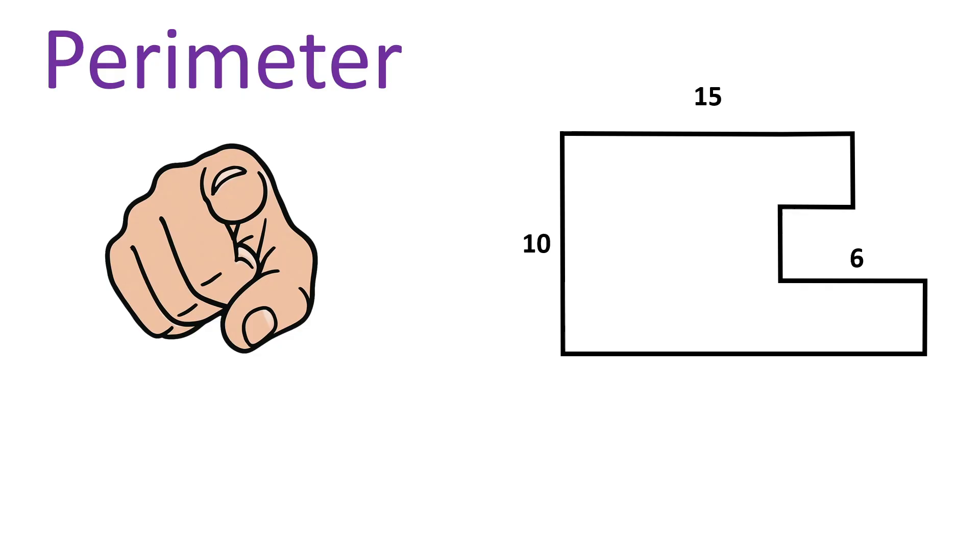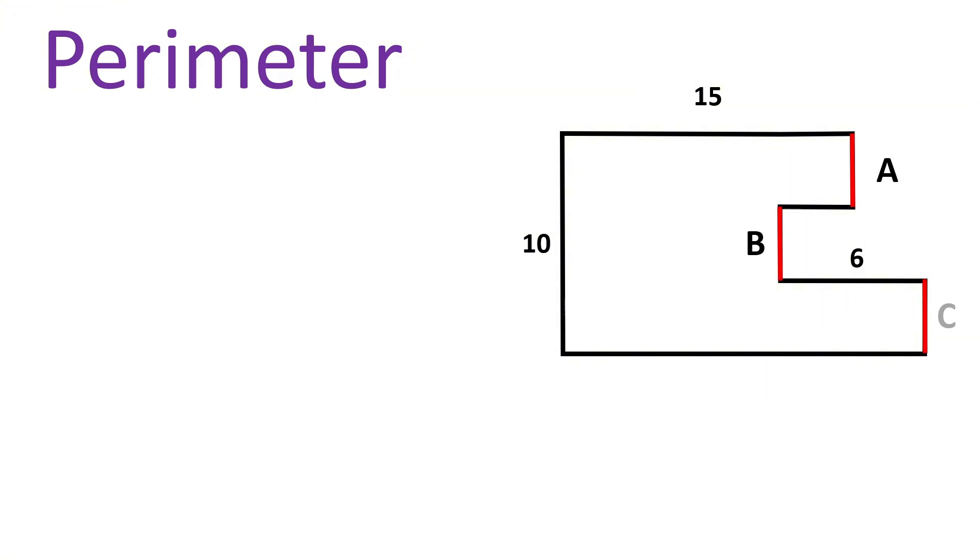So can you find its perimeter? Let's check it step by step. As a first step, let us label these vertical missing side lengths as A, B, and C, and then label both these horizontal missing side lengths as X and Y.